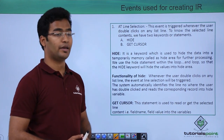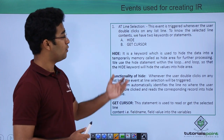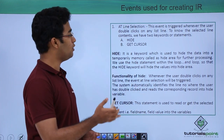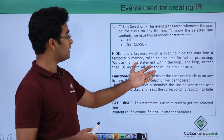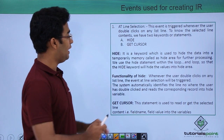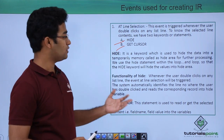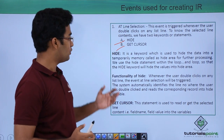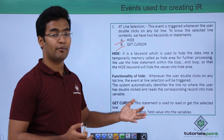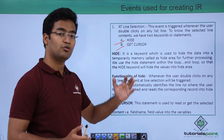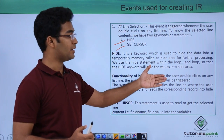Now let us see the events used for creating interactive reports. First there is AT LINE SELECTION. This event is triggered whenever the user clicks or double clicks on the list line items. To know the selected line contents, we have two other keywords: HIDE and GET CURSOR. HIDE is a keyword used to hide the data into a temporary memory space called the hide area for further processing. When we are double clicking on a particular line item, that particular data is stored into the temporary memory called the hide area.